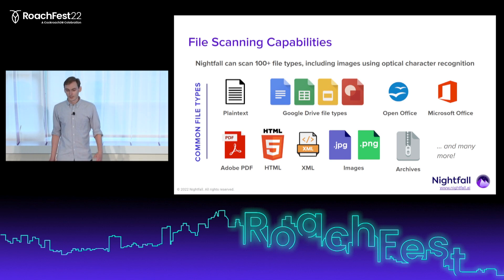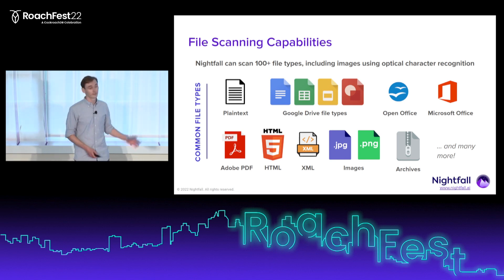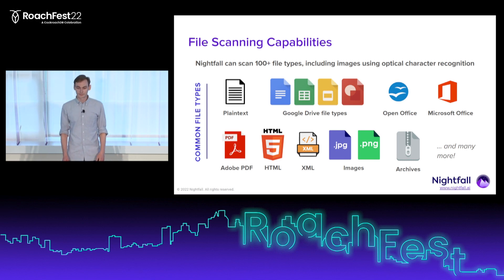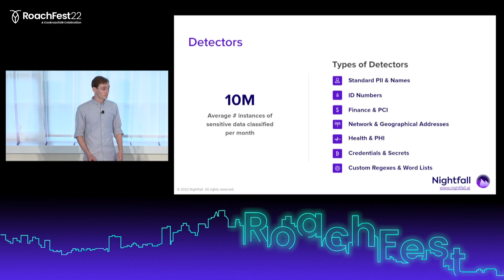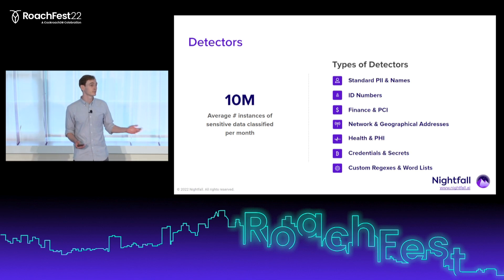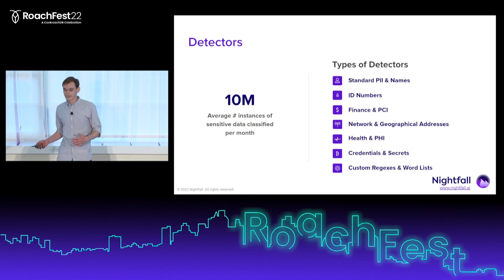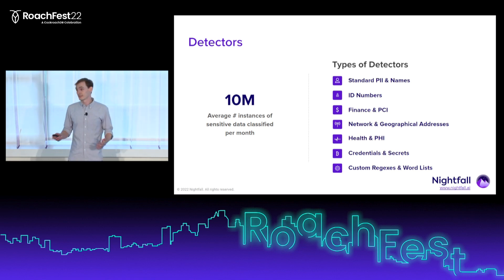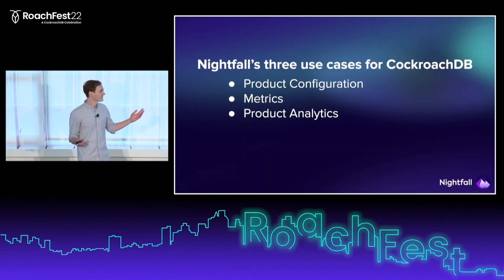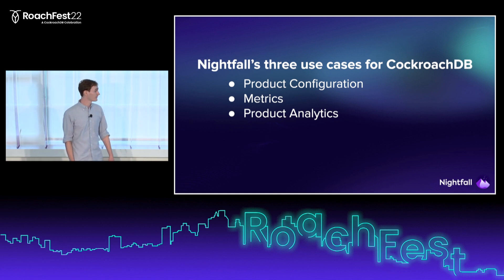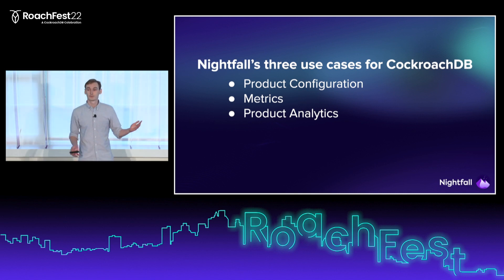We support a bunch of file types for extraction. You can filter on each one — I only want to scan PDFs, I only care about Microsoft Office files — or you can exclude them if you don't want to scan images. We also provide all this through the API or different storage platforms. So we have all this complexity that lives in Nightfall: how do we configure what to scan for, what to do when we find something, where should we scan, and where do we present those digestible results to the end users? We use CockroachDB for all of those things. I'm going to go through how we configure our product, how we collect metrics for our API, and how we produce our dashboard to show what we found.